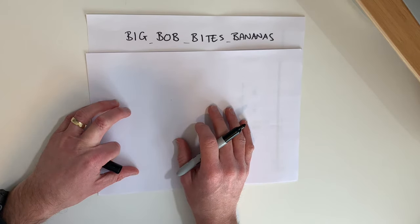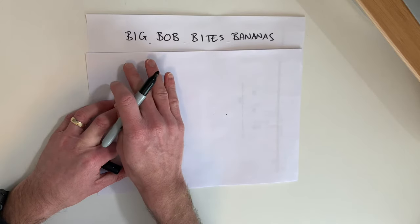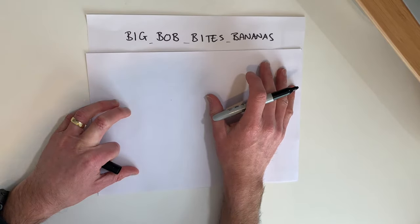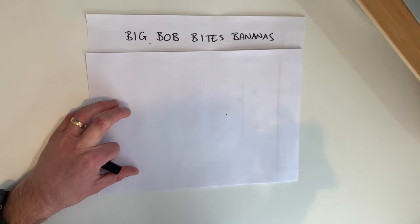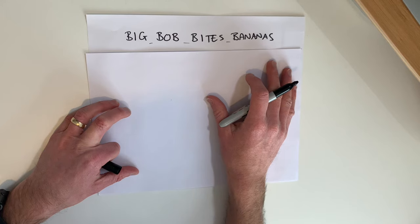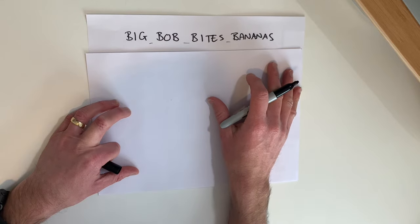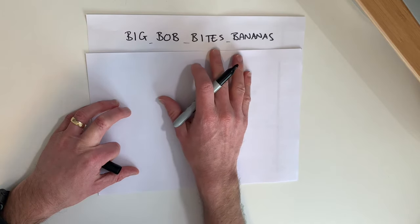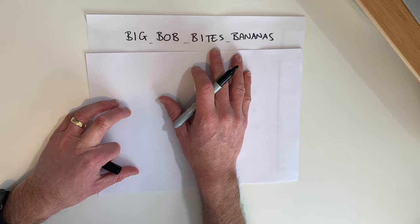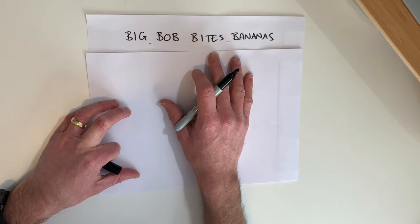The first thing we need to do when looking at compressing this string of text is find the frequency of each character. The goal of the Huffman tree is to find the shortest possible representation for the most frequently repeating parts of the text. However, if something only comes up once or twice, like this E which only appears once, we can get away with a fairly long representation because we're not going to be repeating it very often.